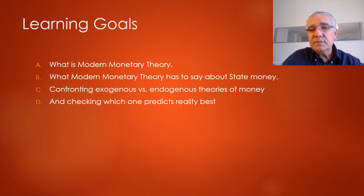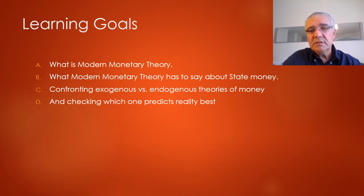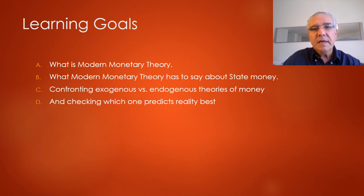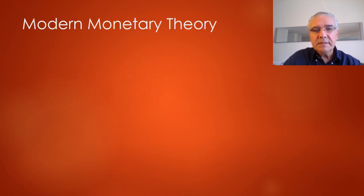The learning goals for this particular lecture are: first, to study what Modern Monetary Theory is; second, what it has to say about state money; and then confronting the two sides — the neoclassical side of exogenous money versus the Modern Monetary Theory view of endogenous money — and then checking which one seemed to be predicting reality best.